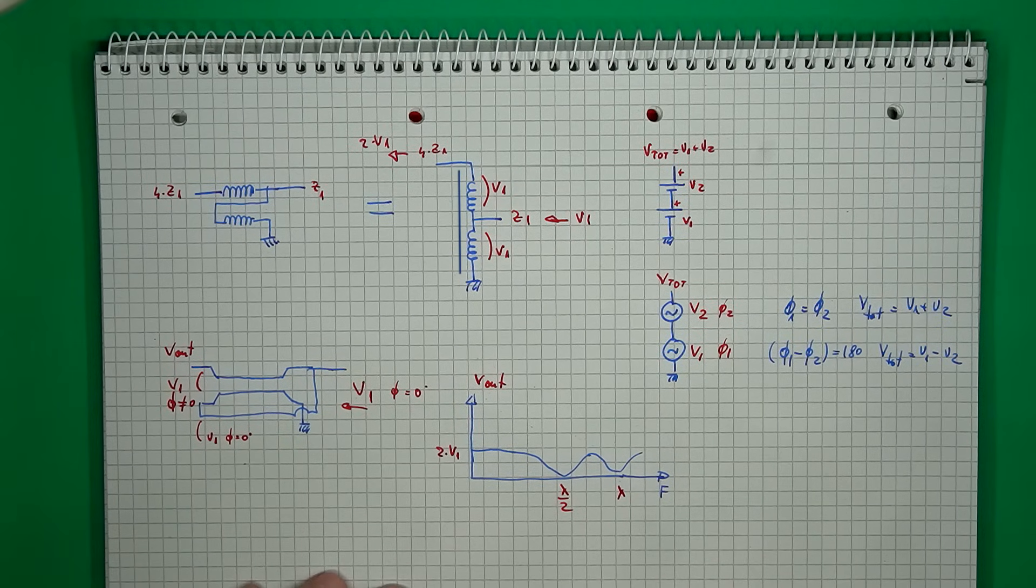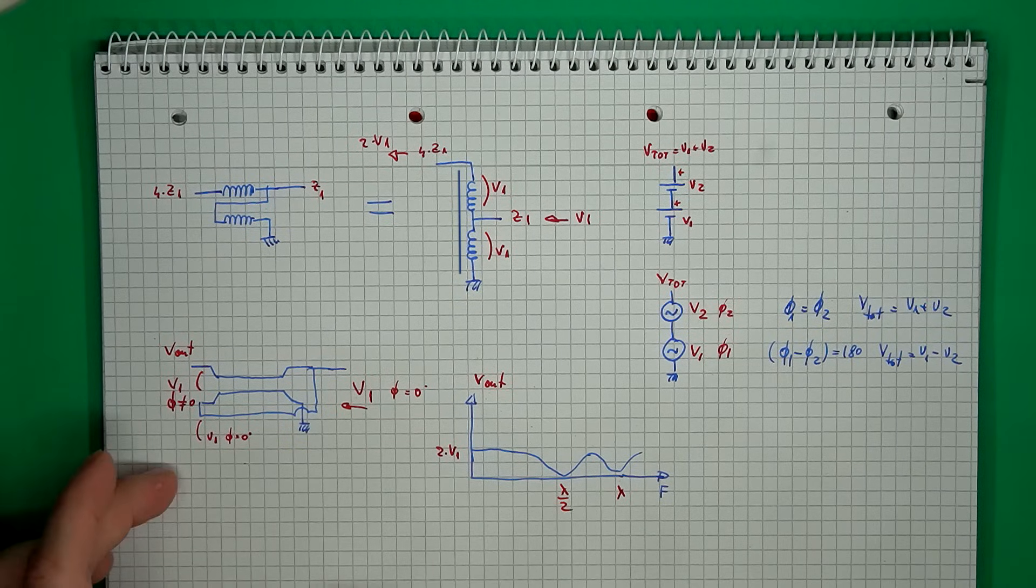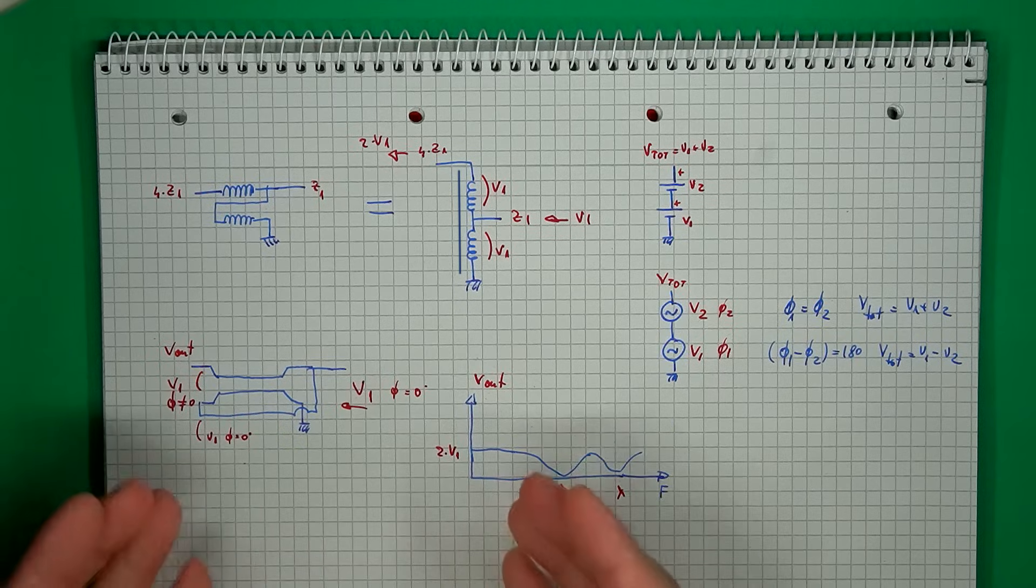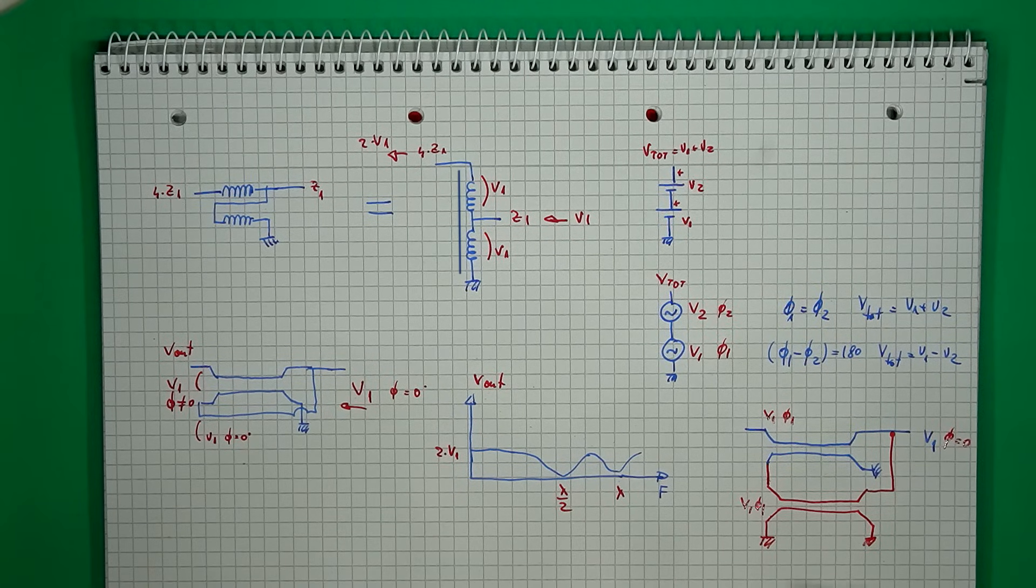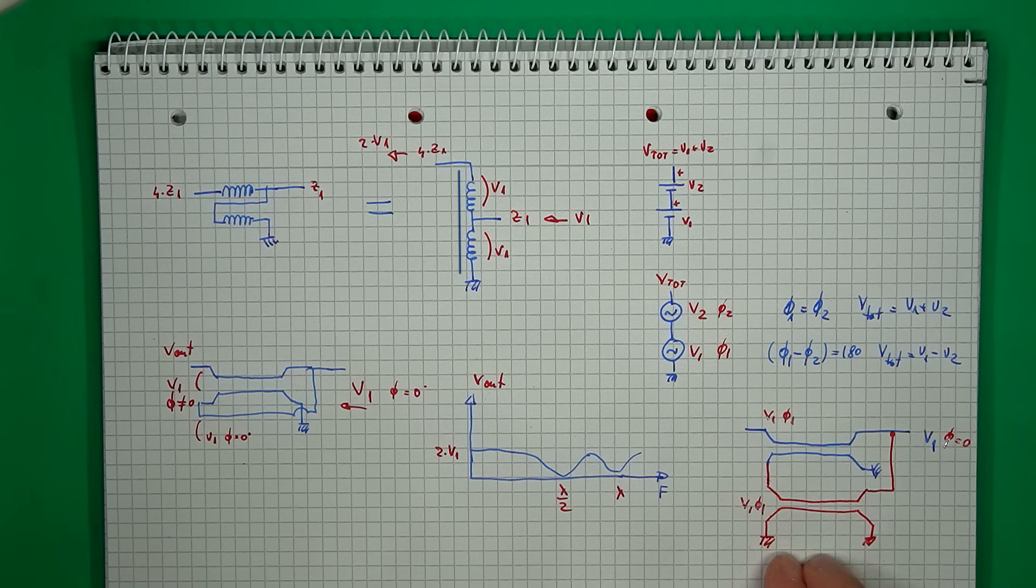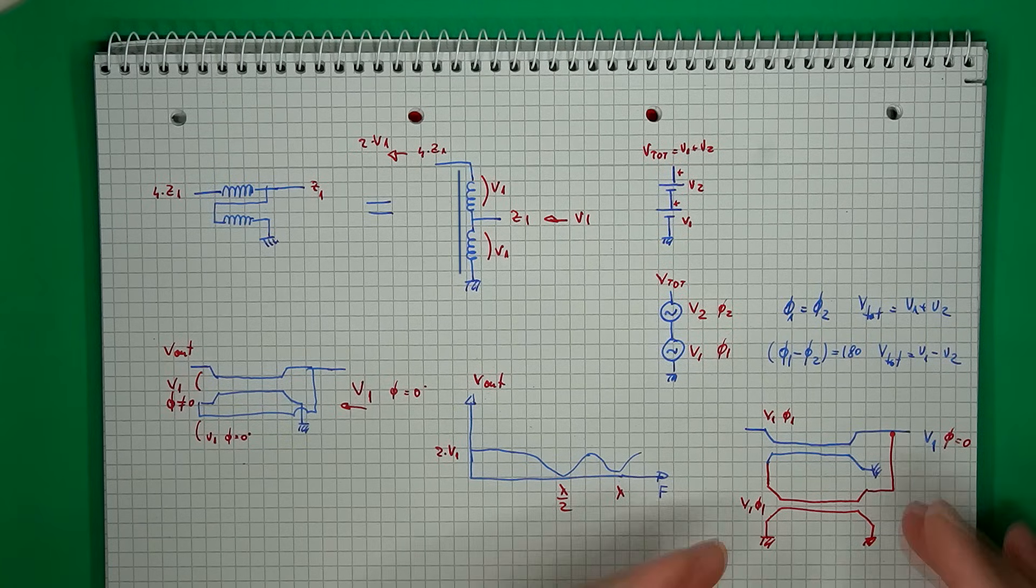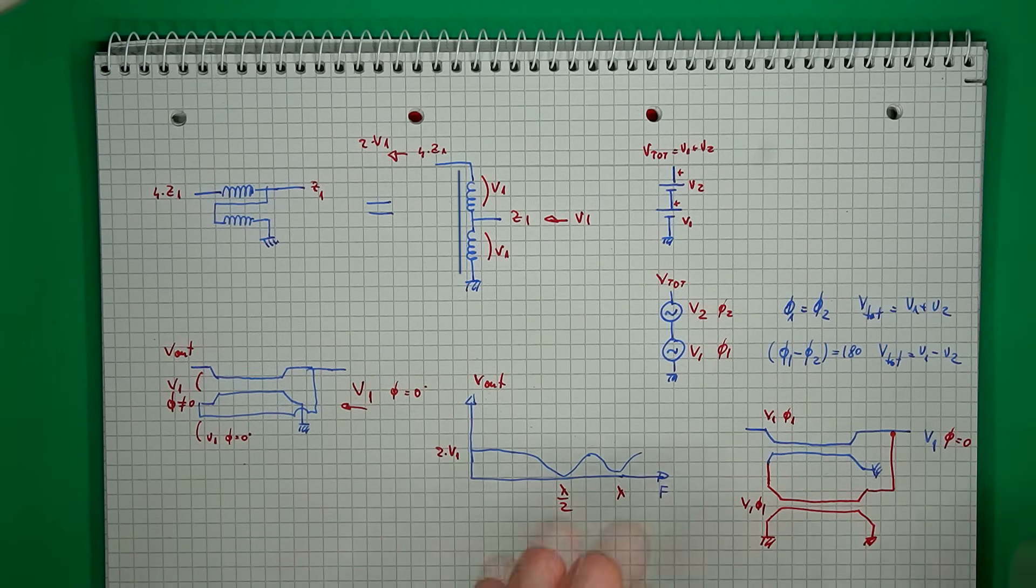So if we want to fix the high frequency behavior of this structure, we need to somehow make sure that the two voltages that are added up have exactly zero degrees of phase shift in between them at any frequency, or in other words, have the same phase shift in reference to the input. And this is achieved by adding an extra delay line with the same electrical length as our first piece. So this needs no magnetic core, it's just there to be a transmission line that has the same electrical delay as the first piece, and by adding this, both voltages that arrive at the end have the exact same phase shift, and then they can nicely add up. So that's the theory anyway.